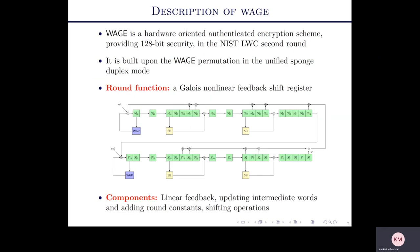WAGE is a permutation-based authenticated encryption scheme built in unified sponge-duplex mode, designed to be efficient in hardware. At its core, it has a WAGE permutation — an iterative permutation whose round function is a Galois nonlinear feedback shift register. It has components including linear feedback updating, intermediate variables, adding round constants, and shifting operations. The state length is 259 bits, viewed as 37 words where each word is 7 bits. There are six S-boxes in the internal state, the WAGE permutation (WGP), and four S-boxes (SB).